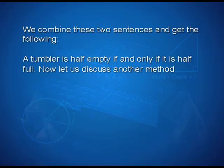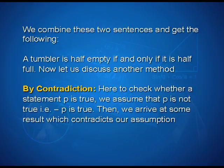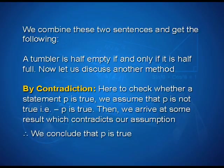Now let us discuss another method — that is, proof by contradiction. Here, to check whether a statement p is true, we assume that p is not true, that is ¬p is true. Then we arrive at some result which contradicts our assumption. Therefore, we conclude that p is true.